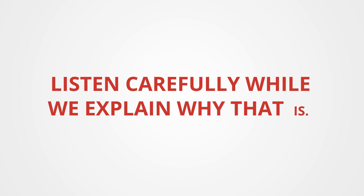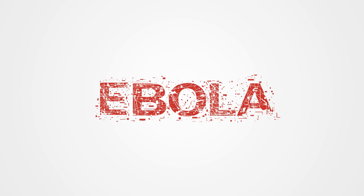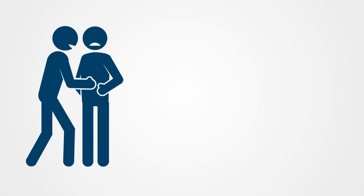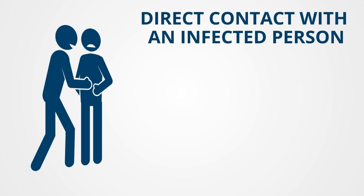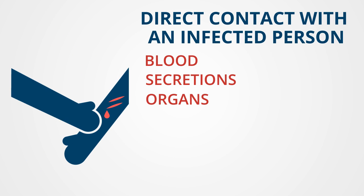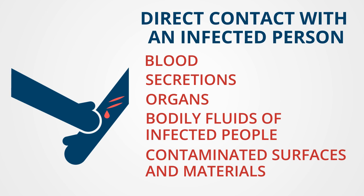The Ebola virus is only spread through human-to-human transmission — that is, via direct contact with an infected person via blood, secretions, organs, or other bodily fluids of infected people, and via surfaces and materials, for example bedding and clothing, contaminated with these fluids.